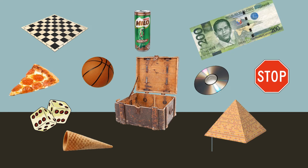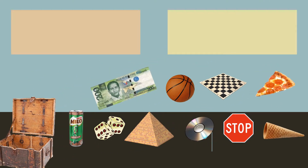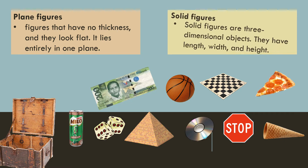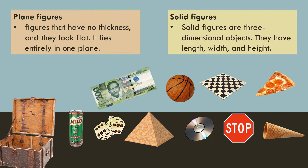Good day! In this video, I'm going to teach you the difference between plane and solid figures. We have different types of objects and we can group them into two. Plane figures are figures that have no thickness, they look flat, and they lie entirely in one plane. Solid figures are three-dimensional objects — they have length, width, and height.